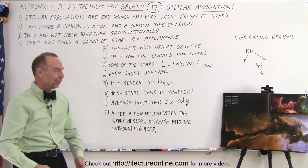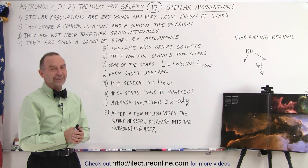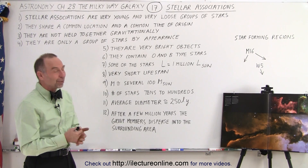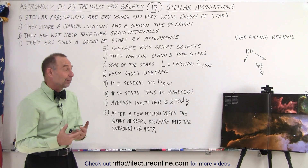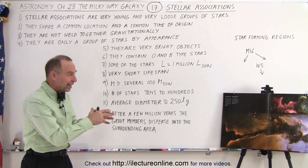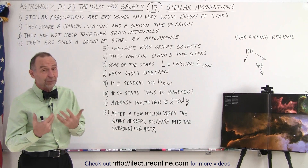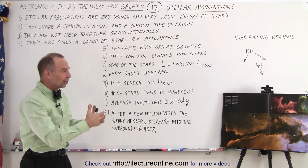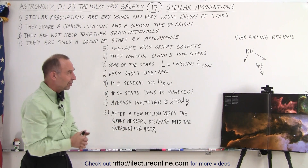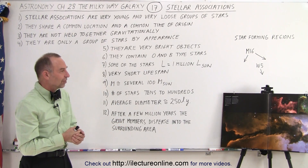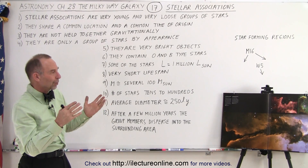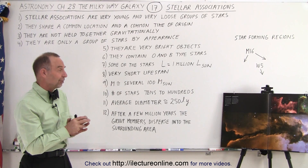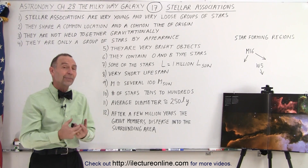They just simply disperse into the surrounding area and can no longer be considered an association. It's a different kind of grouping of stars — interesting in their own right, but typically part of a star-forming region. And those are always of tremendous interest to us, especially the beauty of the molecular clouds and gas clouds and dust, like we see in the Eagle Nebula, M16, also known as the Pillars of Creation, where we can actually see stars and solar systems in the process of formation.